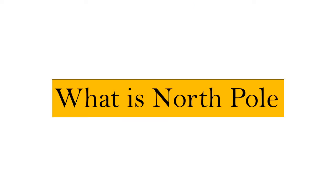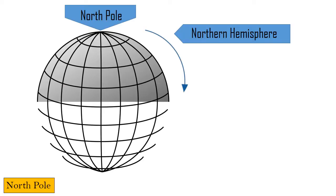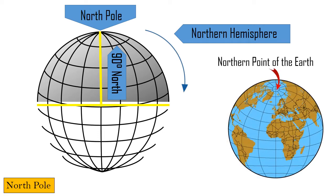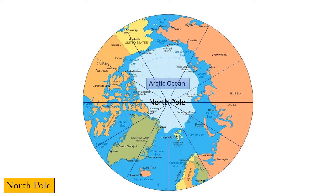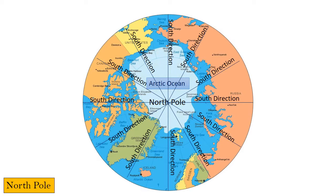The North Pole lies in the northern hemisphere and it is defined as latitude 90 degrees north as well as the direction of true north. The geographic North Pole is the northern point of the earth's axis of rotation. Its location is at the Arctic Ocean at the center of the northern hemisphere, lying in the middle of an ocean. All lines of longitude meet at the North Pole, so it doesn't have any particular assigned time zone — it could be any time throughout 24 hours. Most importantly, from the North Pole, all directions are South.